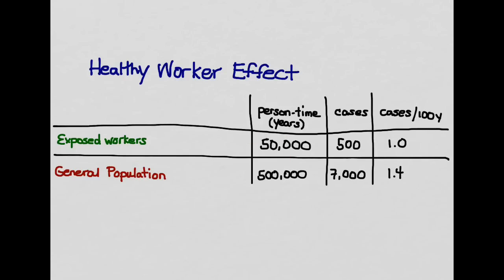And we've got 50,000 years of person-time for our exposed workers with 500 cases, resulting in an incidence of one case per 100 years. And in the general population, we've got 500,000 person-time years, and we have 7,000 cases, and then 1.4 cases per 100 years.